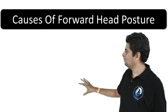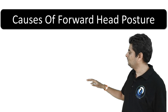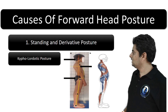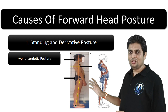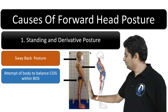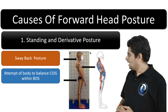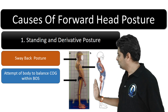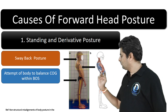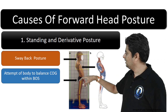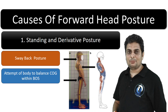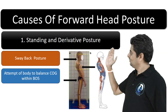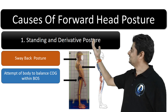Almost the same applies to kypholordotic posture — three segments are specially involved: thoracic spine, lumbar spine, and the head forward. The third is sway-back: the ankle is in plantarflexion, so the COG falls posteriorly. This is compensated by a recurvatum at the knee, then the pelvis shifts further, followed by the thoracic spine, resulting in a forward head.